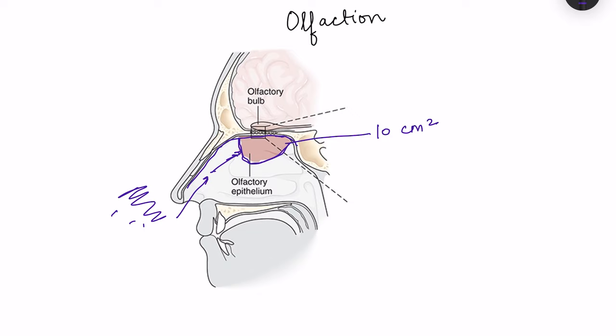The olfactory epithelium has special types of neurons whose cilia have receptors for these odorants, and these neurons are known as olfactory sensory neurons. Let us now see the different types of cells present in this olfactory epithelium.